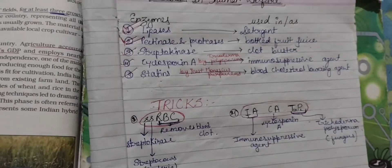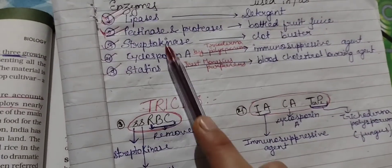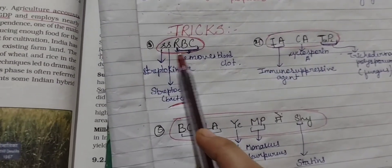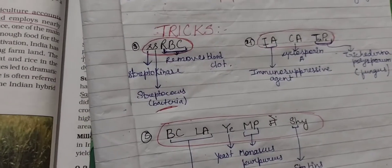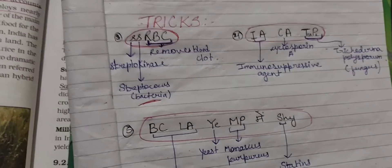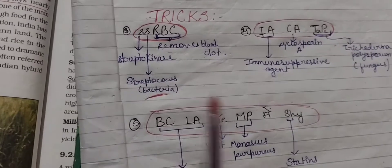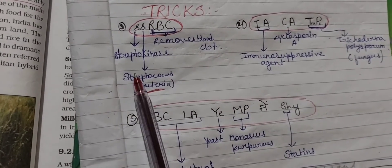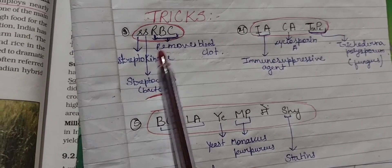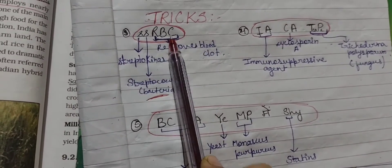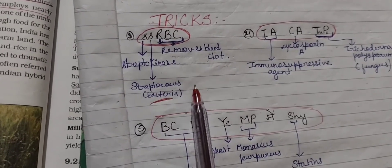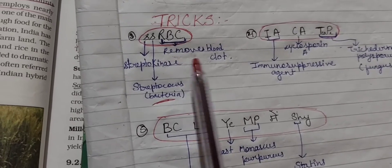Now the third one: streptokinase, which is like a clot buster. The trick is called SSRBC — that means Single-Stranded RBC — to help you remember. So streptokinase, produced by the bacterium Streptococcus, is used to remove blood clots. RBC: Remove Blood Clots.